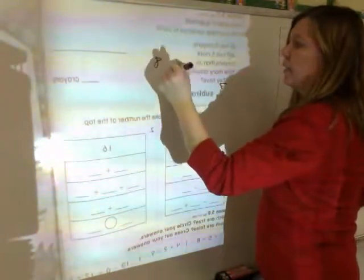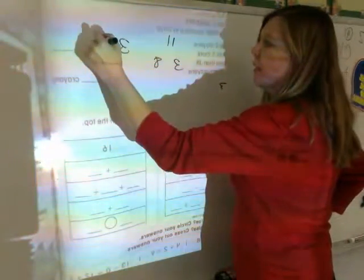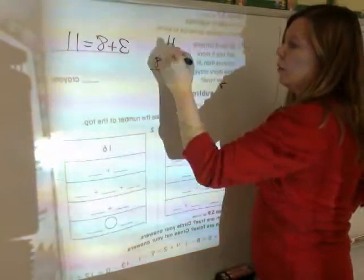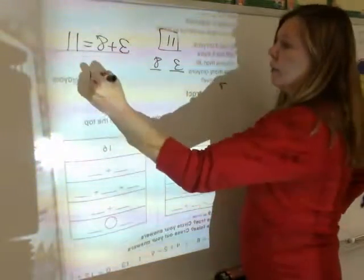So, 3 plus 8 is 11. So, my number sentence 3 plus 8 equals 11. So, I just did this because I like that whole part, part chart. So, my whole is there. My two parts are here. How many crayons do they have? 11.